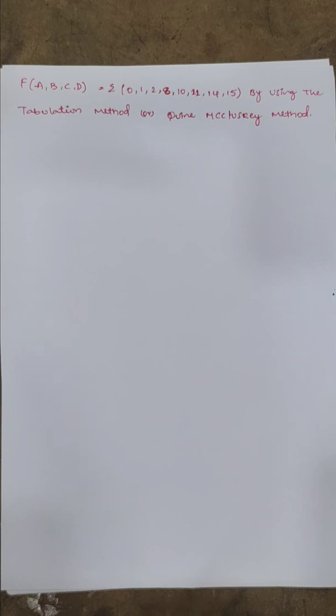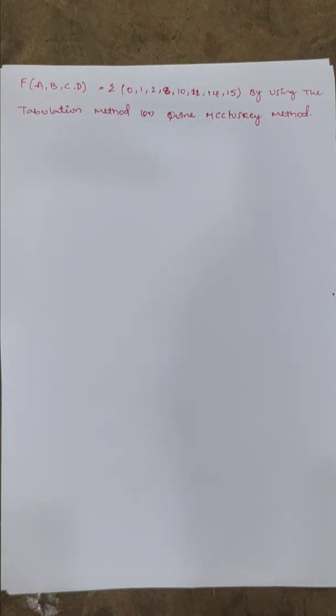Hi guys, welcome to my channel Engineering's Choice. Today's topic is the Quine-McCluskey Method, also called the Tabular Method. These are two names for the same approach: the Quine-McCluskey Method and the Tabular Method. We will minimize a Boolean equation using this method.